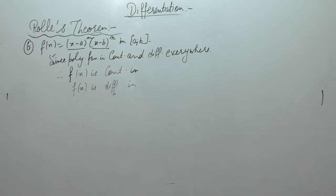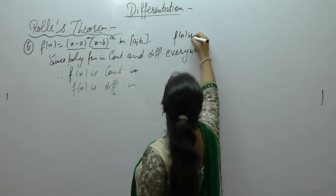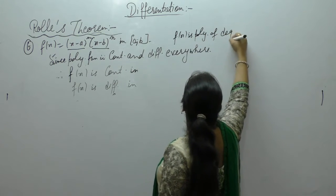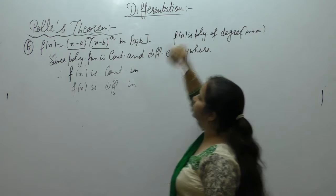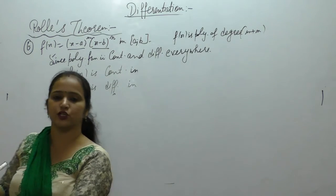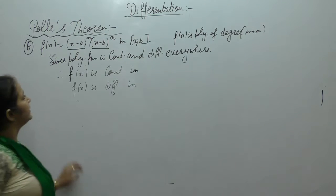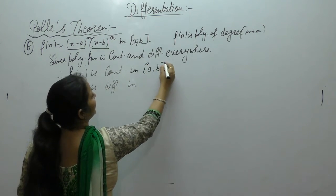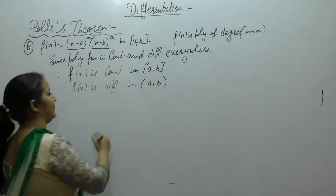Therefore, f(x) is a polynomial of degree m plus n, and every polynomial function is continuous and differentiable. Therefore, f(x) is continuous on the closed interval [a,b] and differentiable on the open interval (a,b).